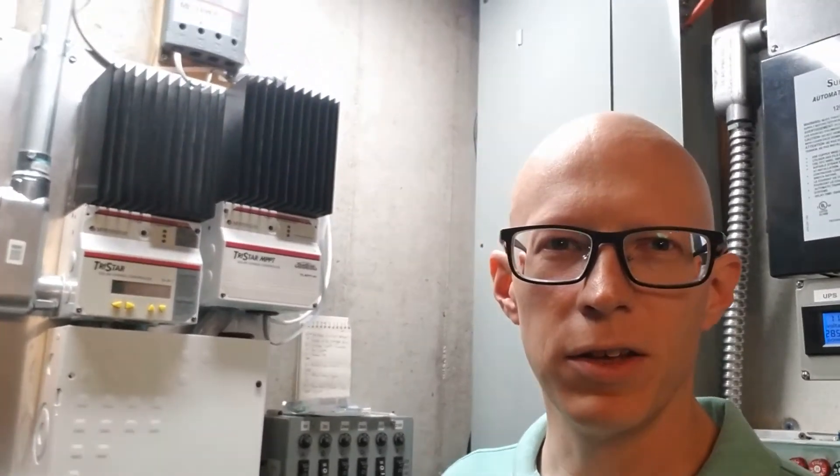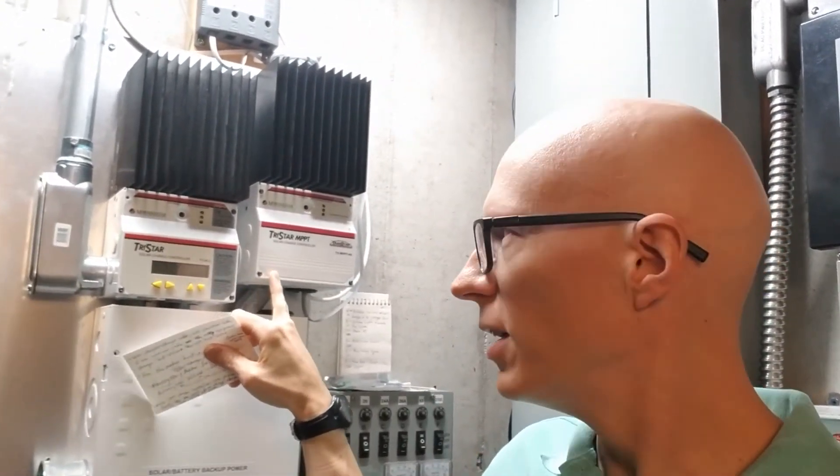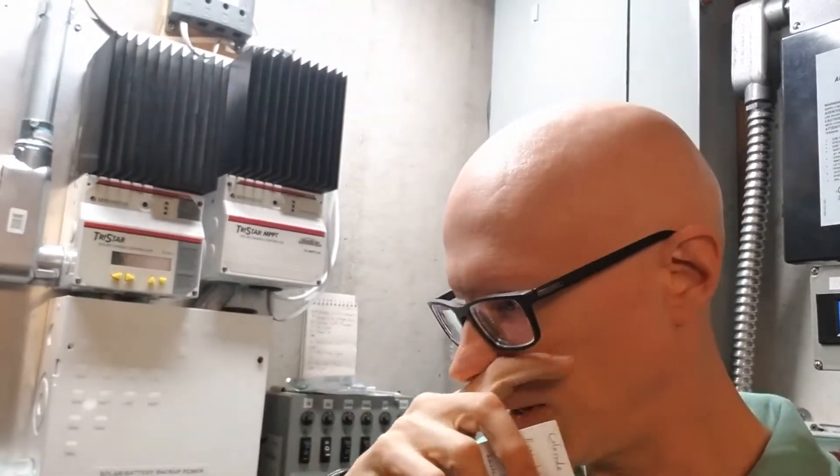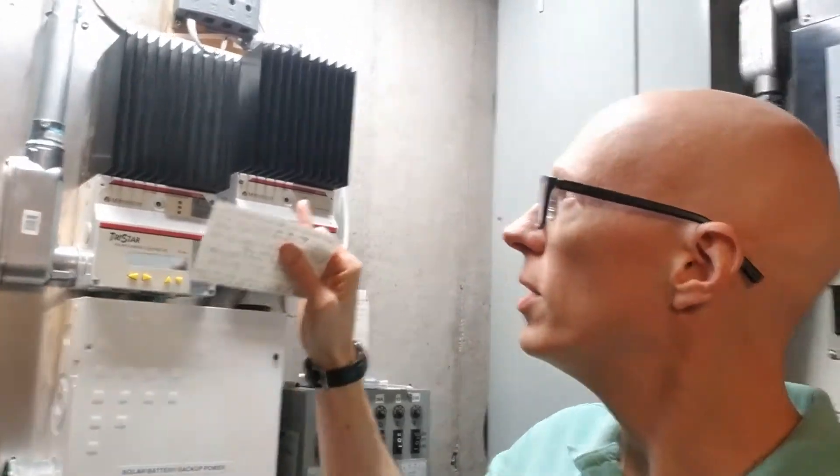So the other thing is that Morningstar didn't communicate well, I feel. Make sure you have the settings for both your charge controllers, your Morningstar charge controller settings, the same first. And make sure they're all set up so they'll act the same and react the same to the same batteries and whatnot before you hook them up to this meter hub.